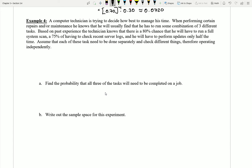Now let's take a look at example number four and get some more practice with this idea of using the independence rule to calculate probabilities. Let's see what we have here. A computer technician is trying to decide how best to manage his time. When performing certain repairs and or maintenance, he knows that he will usually find that he has to run some combination of three different tasks.